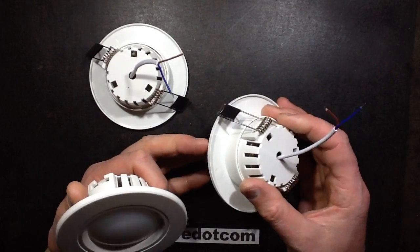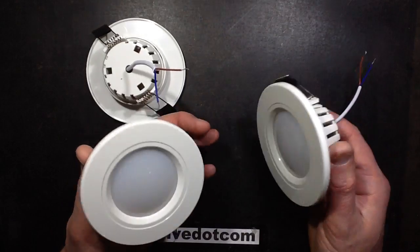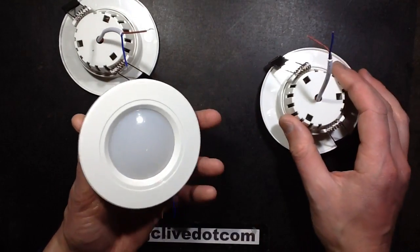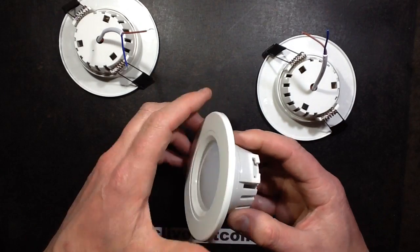The other downside is that obviously if you install them in a new installation, then when they degrade over time you're not going to be able to just put a new GU10 lamp in, you're going to have to change the whole fitting. And they unscrew like this internally.